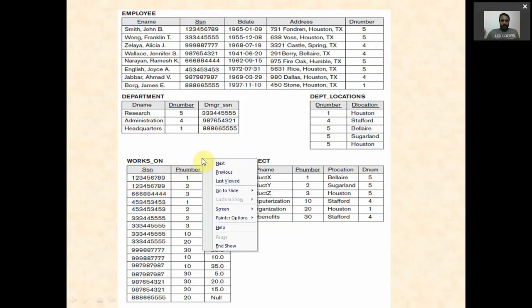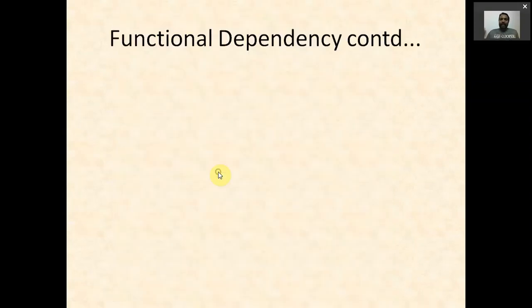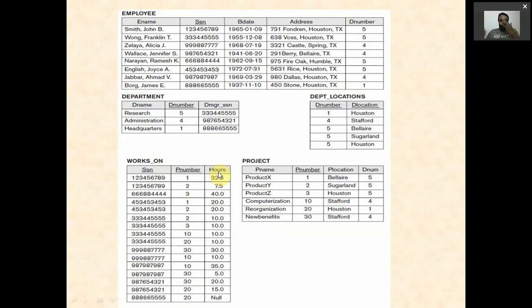You can see that when the same SSN appears in two rows, the hours value is different because the PNumber is different. So hours is dependent on both SSN and PNumber, not on SSN alone. Similarly, we can see other functional dependencies in the other tables as well.